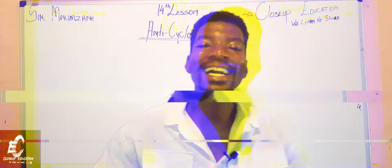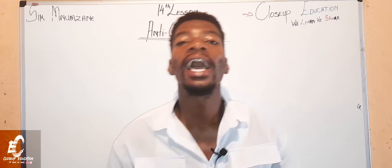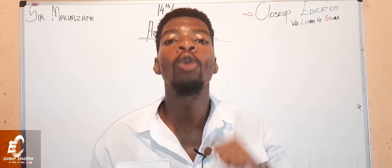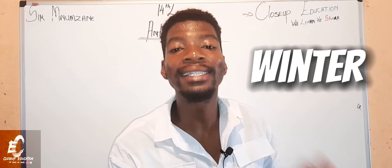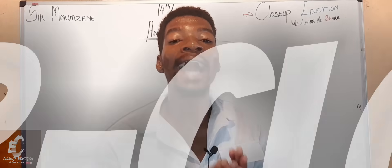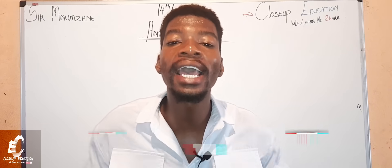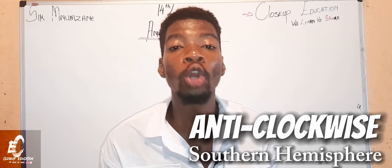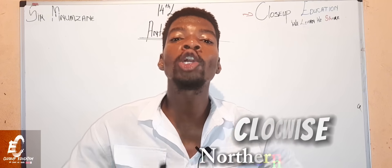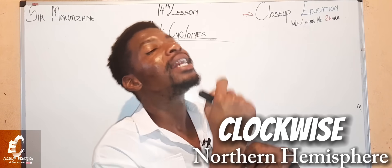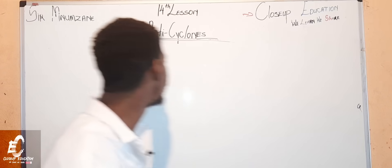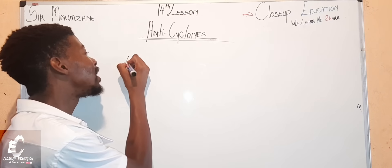Today we'll be speaking about anti-cyclones. Anti-cyclones are high pressure weather systems which occur in winter, and they rotate counter-clockwise — or anti-clockwise — in the southern hemisphere, and clockwise in the northern hemisphere. Let's write down the definition.